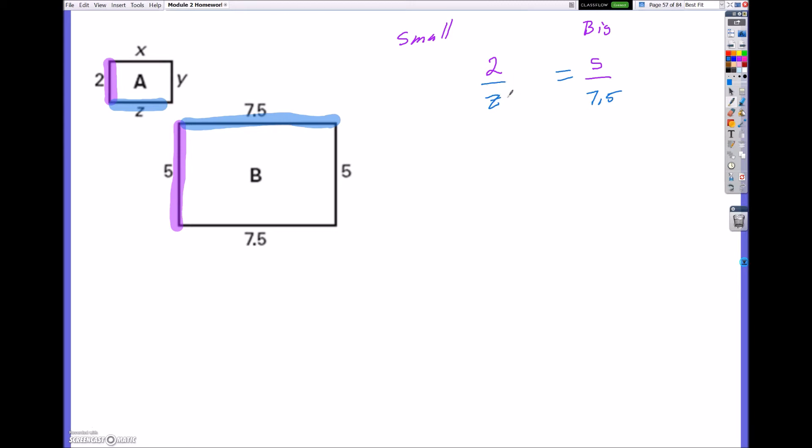So let's go ahead and look at z first. Now to solve these, all we do is solve for z. We can do that by multiplying z on both sides and multiplying 7.5 on both sides, which is pretty much the same as cross-multiplying. So this will give us 2 times 7.5, which equals 15, z times 5, which equals 5z. And when I divide both sides by 5, I'm going to get z is equal to 3.